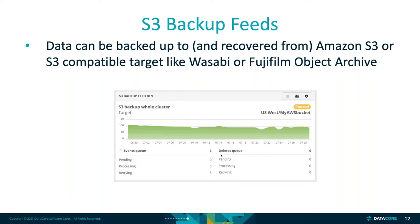Some that we see out there in the field — it's not just Amazon S3 or any one of the flavors of Glacier. There's also services like Wasabi or Fujifilm Object Archive, which is a tape archive. So there are a lot of different options from a feed or replication perspective.